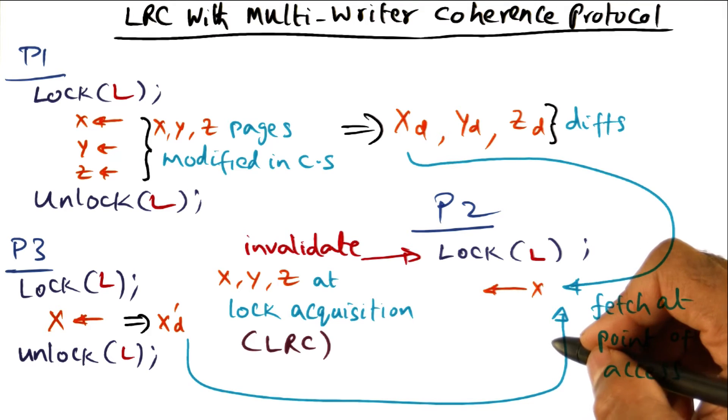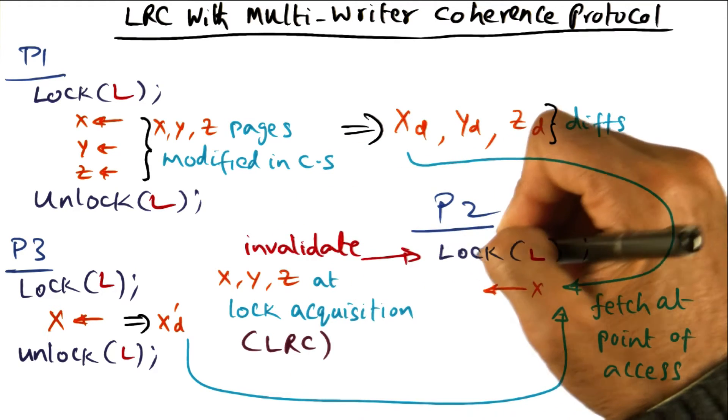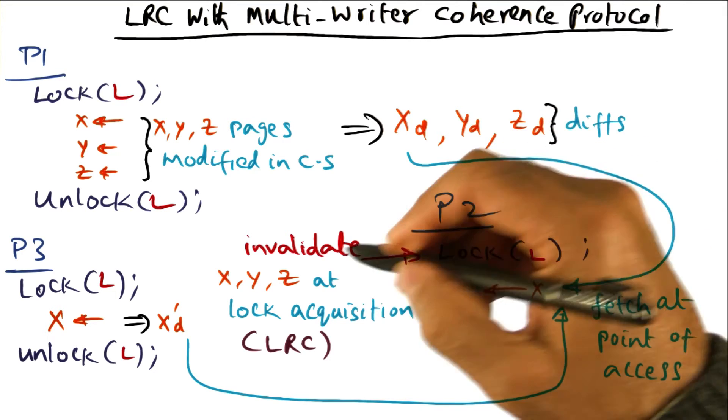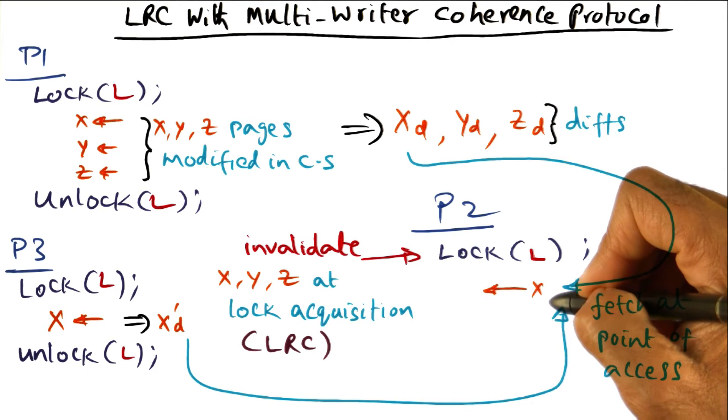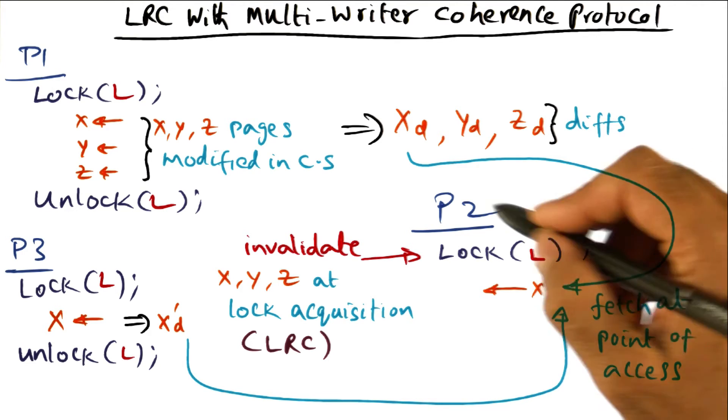So you can see that even though the invalidation was done right at the beginning, we are procrastinating getting the diffs till the point of access. So this is what LRC allows you to do, is just bring in what this guy needs.